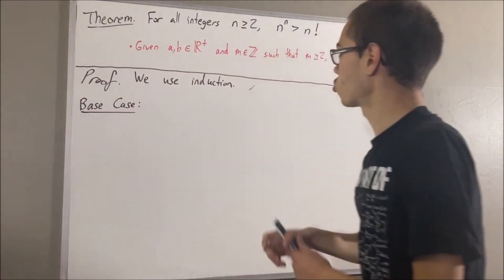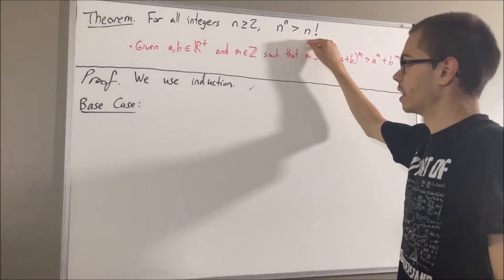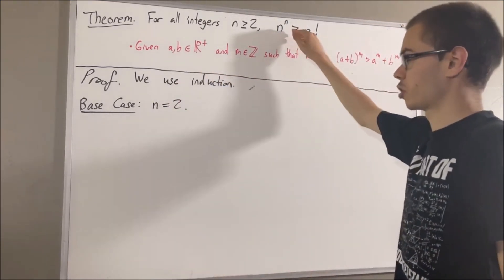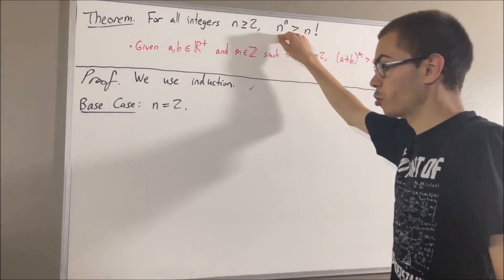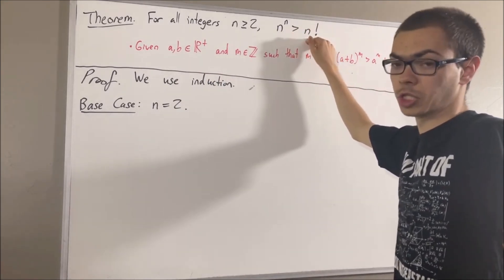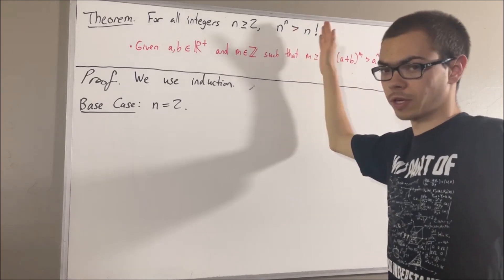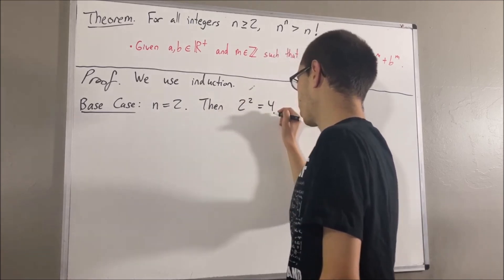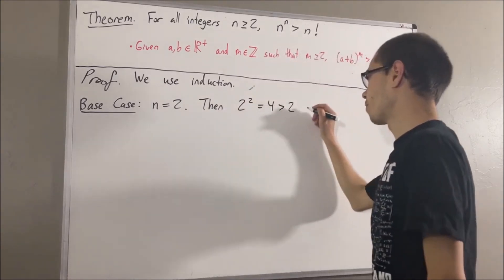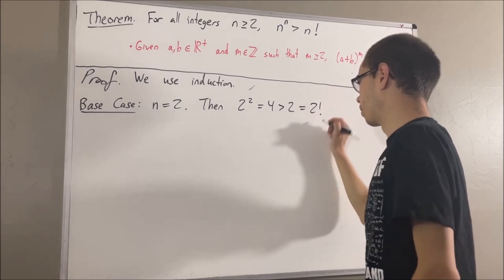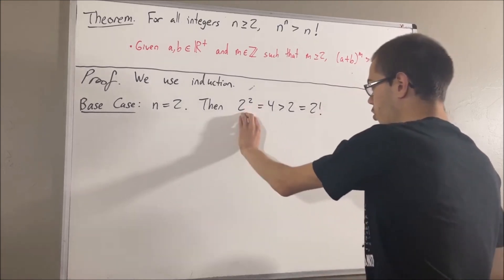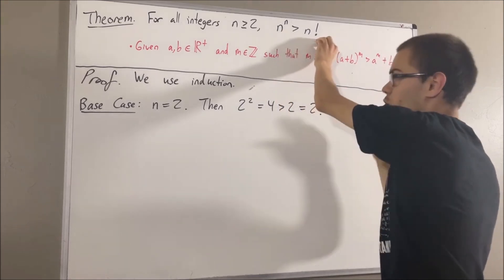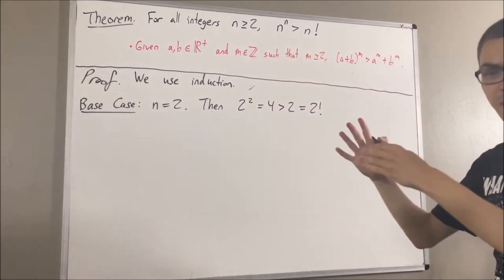In the base case, we're trying to prove that this is true in the case where n is equal to 2. Of course, 2 squared is greater than 2 factorial. Writing this up: 2 squared is equal to 4, 4 is greater than 2, and 2 is equal to 2 factorial. So we see that 2 squared is greater than 2 factorial. This completes the base case.